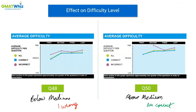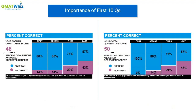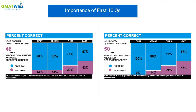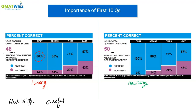Now let's look at the attempt data of these two students in the rest of the quarters. The accuracy in the third quarter and last quarter is identical for both students — the difference was only in the first quarter. The first student got a question incorrect in the first quarter, maybe due to a silly mistake, and the second student did not. The result: a 48 versus a 50. You have to be very careful with the first 15 questions.